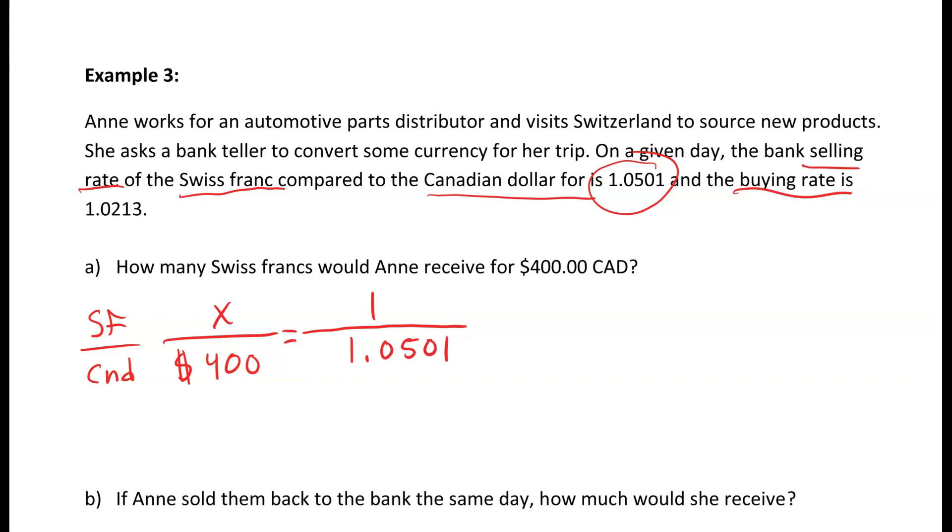Put your equals in the middle. Now you've set up your cross multiplication which is going to get us 1.0501x equals 400. Next thing that we need to do is get x by itself, so we divide by the 1.0501 on both sides.